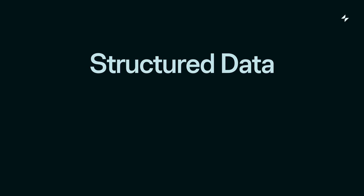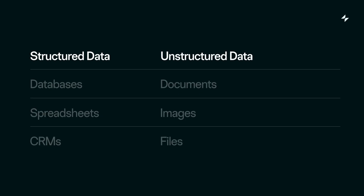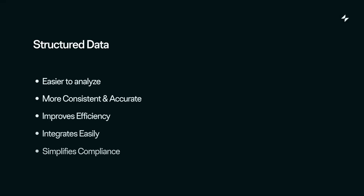Let's talk about the Glide AI toolkit and cover the two most important principles when building with AI and Glide: structured data and chaining. Businesses generally operate with both structured and unstructured data. Structured data includes things like databases, spreadsheets, and CRM systems, while unstructured data includes documents, images, and files. Structured data is much more valuable to a business because it's easier to analyze, ensures consistency, is more accurate, and improves efficiency.